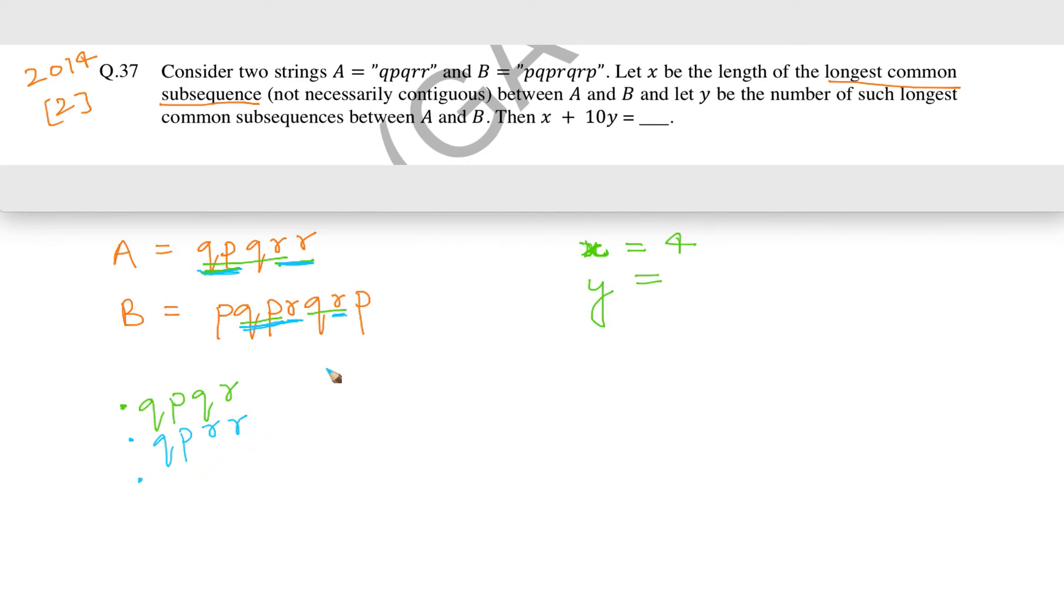Is there any other possibility? Let us drop the first Q and try PQRR. Is it possible? Let us start with P, then Q—it is there—and then R, R. Yes, it is also there. So PQRR is also possible.